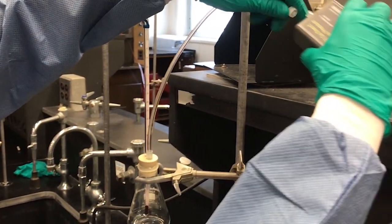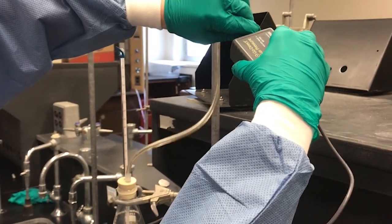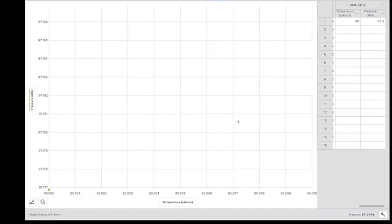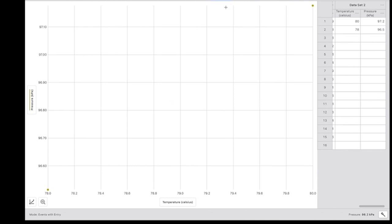We pull the flask out, attach the tube to the pressure sensor to ensure a closed system, and start recording the pressure after the temperature reaches 80. Every two or three degrees, we noted the pressure and recorded it. That is what you see here. We did that again until the air inside the system reached 45 degrees.